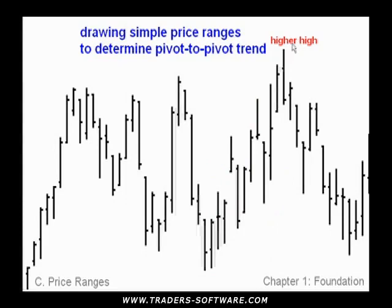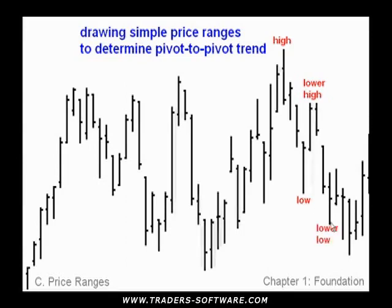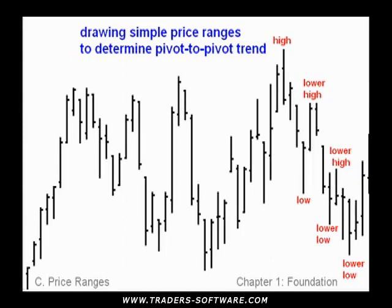From this higher high, price drops to this low. From this low we move up to this high, which is a lower high compared to the previous pivot high — a lower pivot high. We then move down to a lower low, then up to a lower high, and down to a lower low. This is the end of part one — the foundation which the rest of the course will be built on. This is the definition of trend: higher lows and higher highs, or lower lows and lower highs, pivot to pivot. The next chapter, chapter two, is structure — first price structure, then time structure.